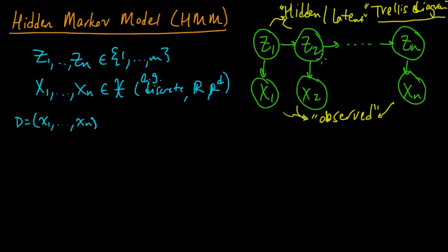And so since these are observed, maybe following our earlier convention for graphical models, we could shade those in. So this is the model, the probabilistic model. And let's write down what this means, the fact that the joint distribution respects this.